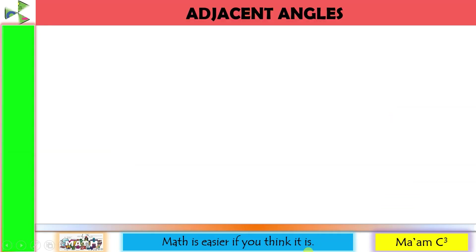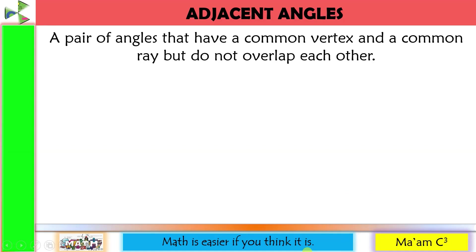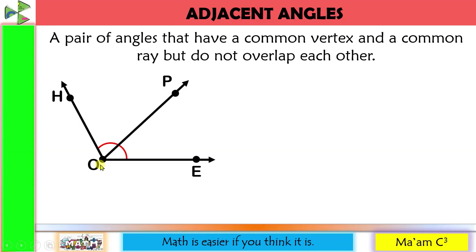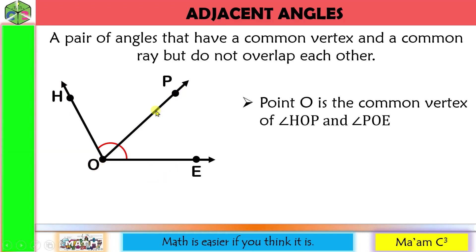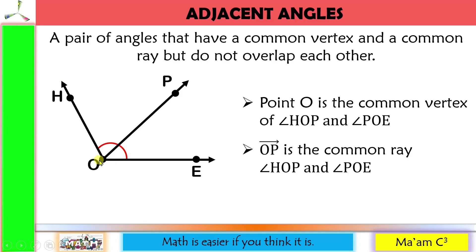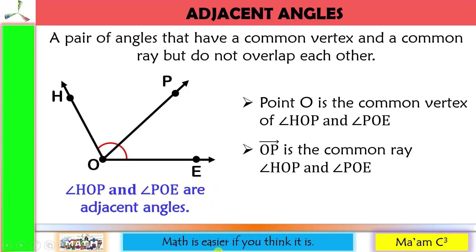The next pair is adjacent angles — a pair of angles that have a common vertex and a common ray but do not overlap each other. Here is an example: point O is the common vertex of angle HOP and angle POE. Ray OP is the common ray of angle HOP and angle POE. They have a common vertex, a common ray, and they do not overlap each other.